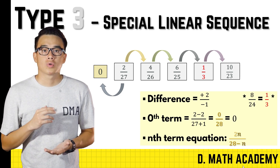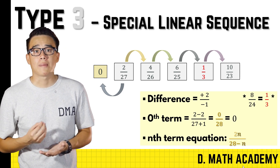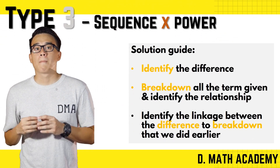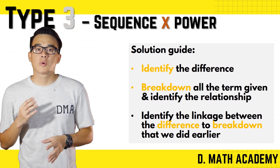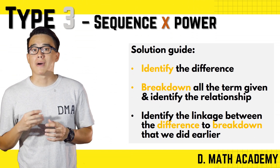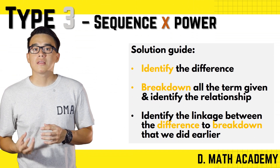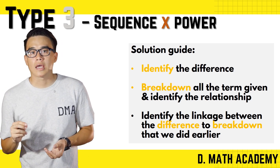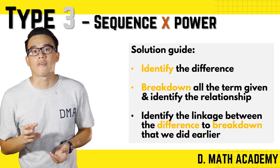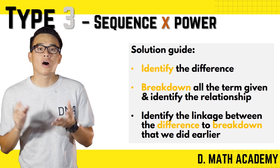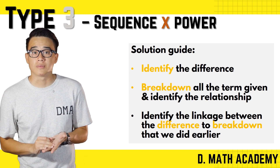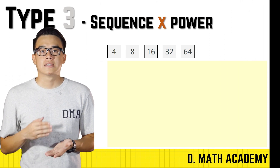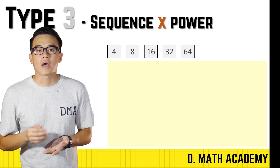Moving on, we have n-term sequences combined with powers. As usual, we identify the term-by-term difference, then list down how the terms progress relating back to that difference, and finally combine all this information to construct the n-term. Our question here is: 4, 8, 16, 32, and 64.